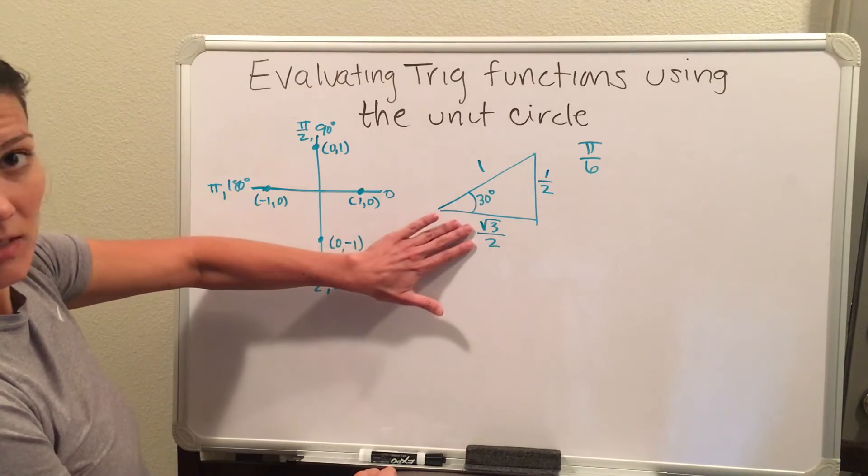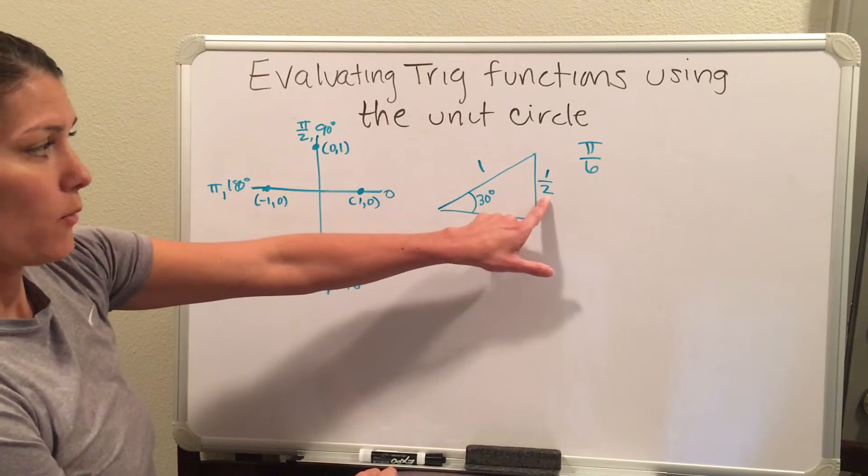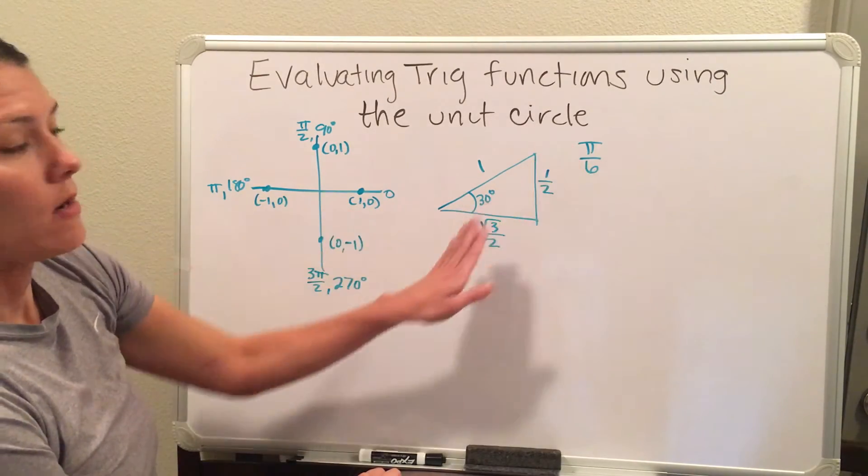Again, my cosine will be my x value, my sine will be my y value, and then my tangent will be my y over x.